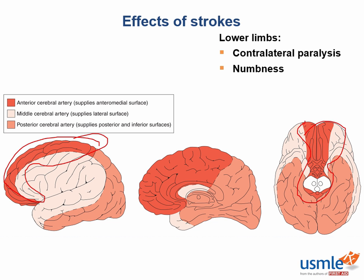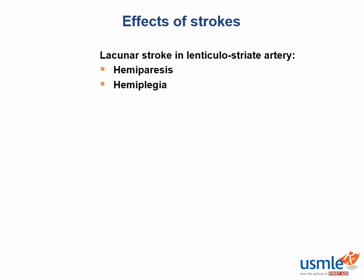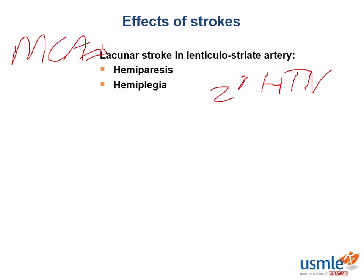Last on the anterior circulation is the lenticulostriate artery. This can be really critical — it is a smaller branch of the MCA and is a common location for lacunar infarcts. These are infarcts that occur secondary to hypertension. Because this vessel supplies the striatum and internal capsule, you can have severe hemiparesis as well as hemiplegia. Lacunar strokes can occur in other deep brain structures as well, and where it occurs will determine what the symptoms are.